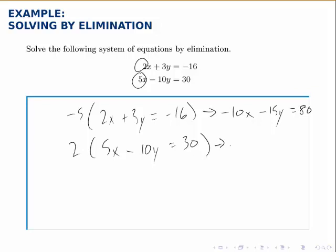The second equation, 2 times 5 is 10, 2 times negative 10 is negative 20, and 2 times 30 is 60.